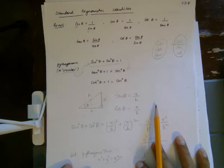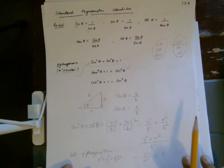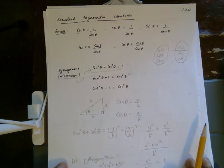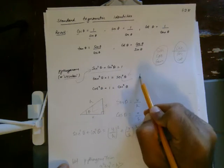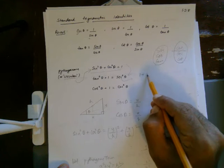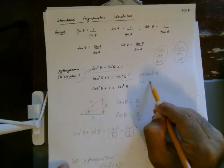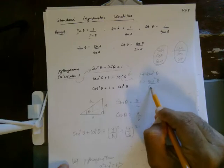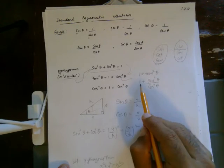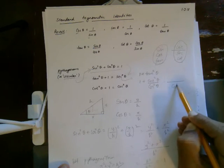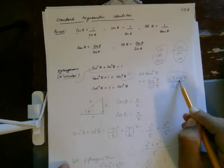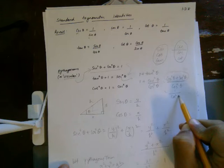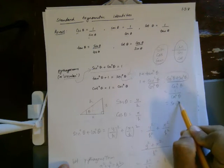Going from the main identity to the others is easier. You can verify that 1 plus tan squared theta — since tangent is the ratio of sine over cosine — means the LCM is cosine squared. So you get cosine squared plus sine squared in the numerator. You already know that equals 1, so this is 1 over cosine squared, which means it's secant squared.